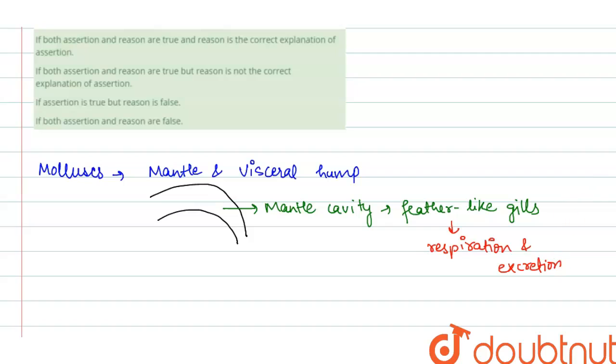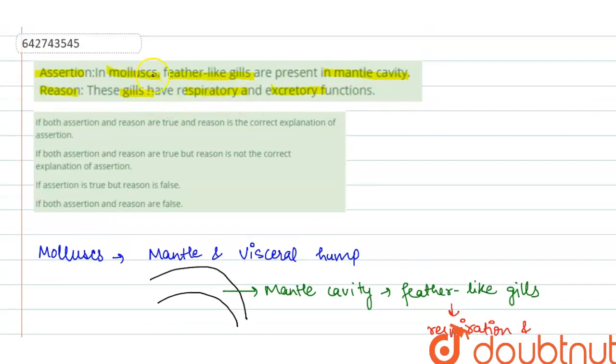So now let's see the statement of assertion: In mollusks, feather-like gills are present in the mantle cavity. This is correct. And the reason says that these gills have respiratory and excretory functions. This is also correct.